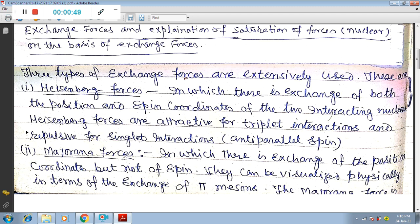In order to discuss the exchange forces, three types of exchange forces are extensively used. These are: Number one, Heisenberg forces, in which there is exchange of both the position and spin coordinates of the two interacting nucleons. Heisenberg forces are attractive for triplet interactions and repulsive for singlet interactions, that is antiparallel spin.